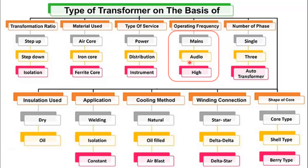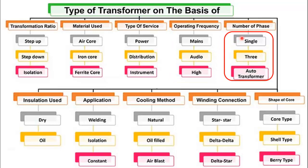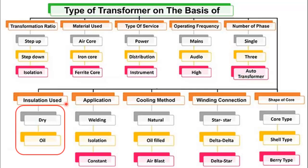Another category is the number of phases. We have a transformer for single phase, three phase, and another category is the auto transformer, in which there is a common winding between the primary and the secondary winding.